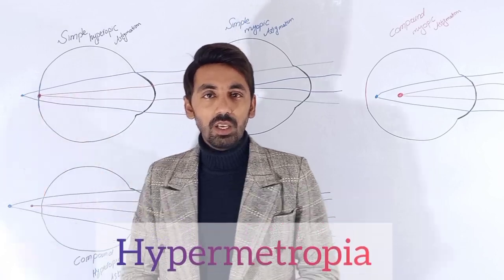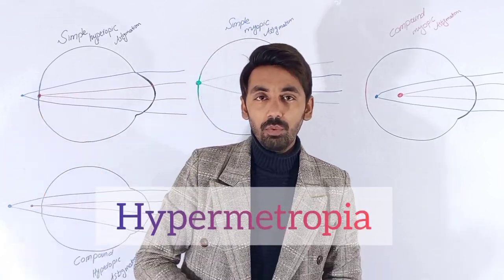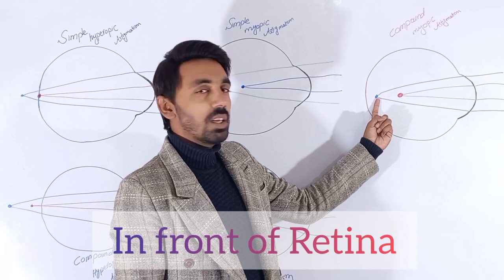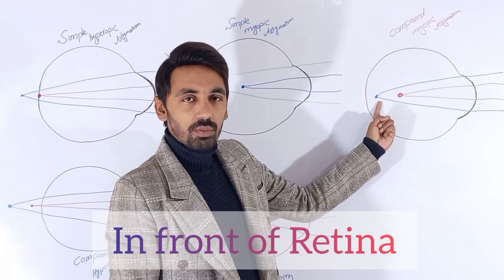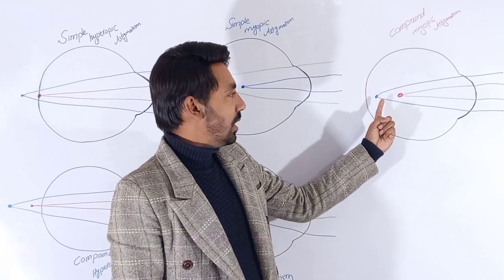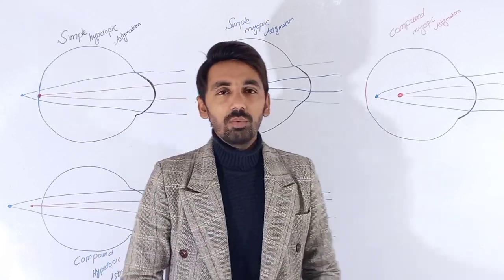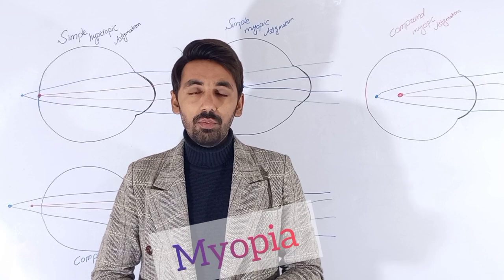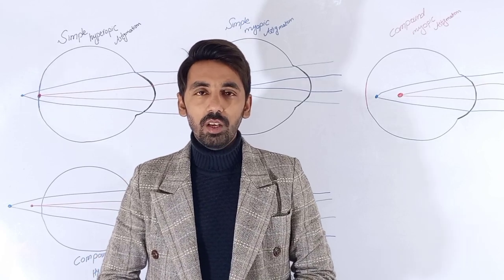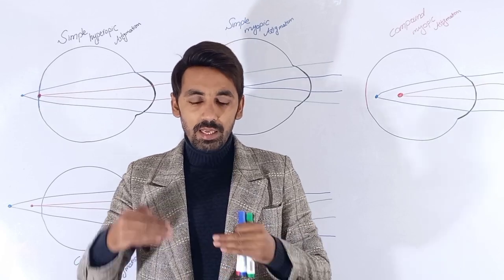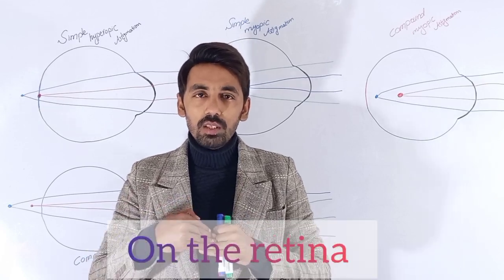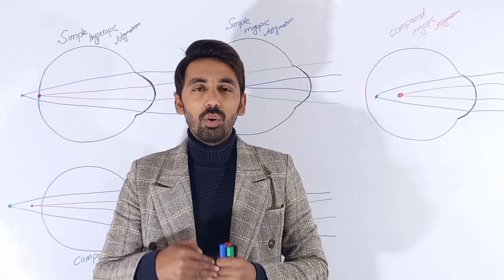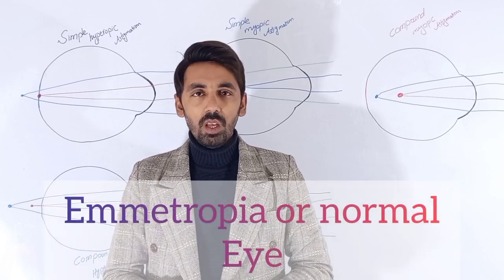And if the light rays which are coming from infinity are focused in front of the sensitive layer of the retina, this state of refraction is called myopia. And if the light rays coming from infinity are focused exactly on the sensitive layer of the retina, this condition is called emmetropia, or the normal type.